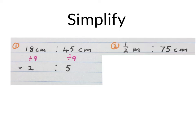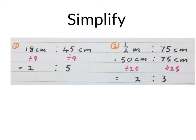Let's simplify a half meter to 75 cm. We make them the same units. So we convert the half meter to 50 cm. Keep the 75 cm. The highest common factor now is 25. The simplified version is 2 to 3, if you divide 25 into 50 and 25 into 75.